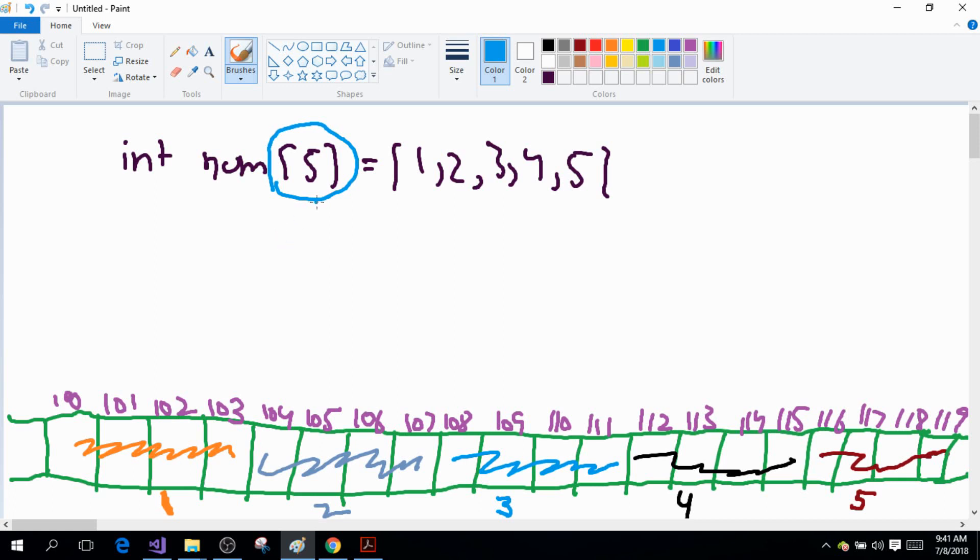So when I write num[0], this gives me the first element of the array which is 1. But how does this work? It works like this: it simply adds the index to the array name, and the array name is the pointer to the first element of the array. That means that the array name stores the address of the first element of the array.